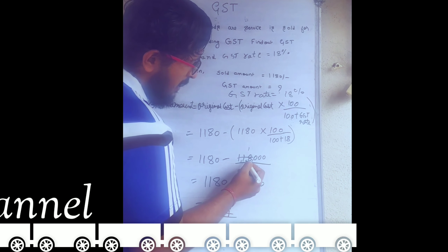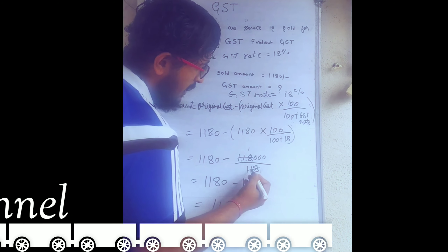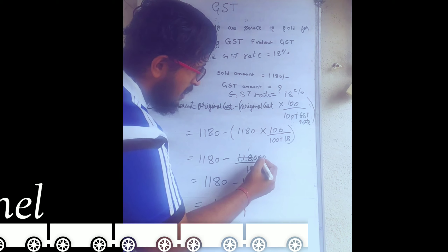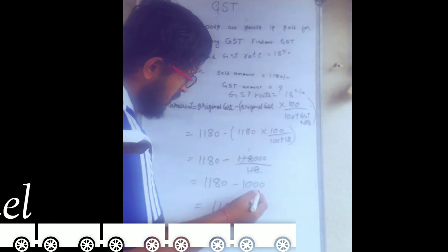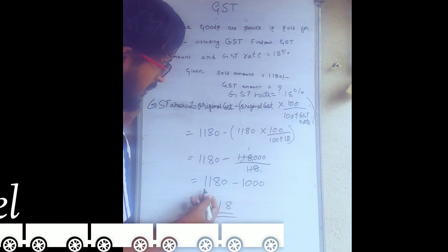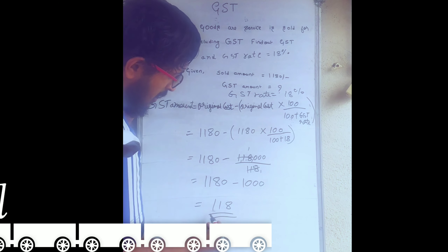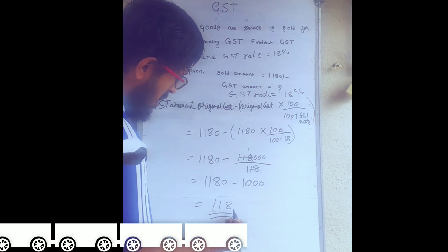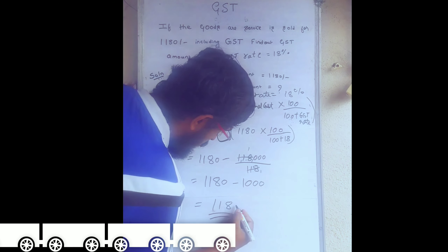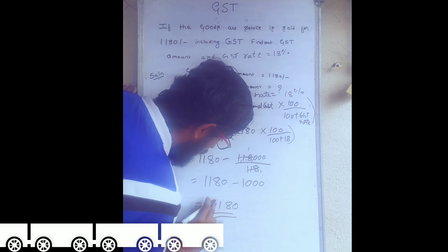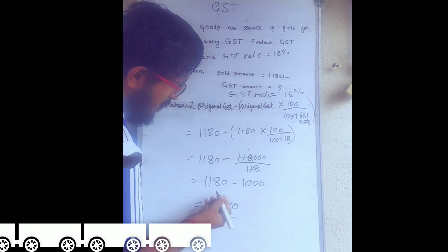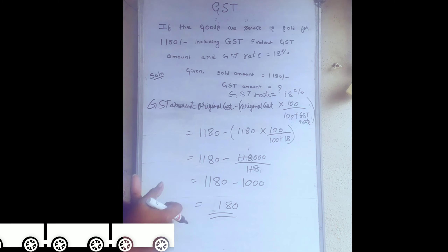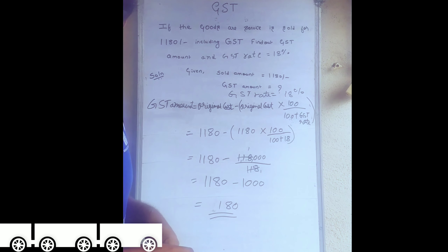It will get 1,18,000 divided by 180. The 1180 cancels, giving 1000. So the remaining answer is 180. Thus 1180 includes a GST amount of 180.